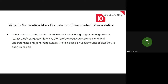Generative AI can help writers write text content by using Large Language Models (LLMs). These are generative AI systems capable of understanding and generating human-like text based on vast amounts of data they've been trained on. The key point is that Large Language Models are all about language — they are trained to understand human language so we can communicate, ask questions, and get answers from them.